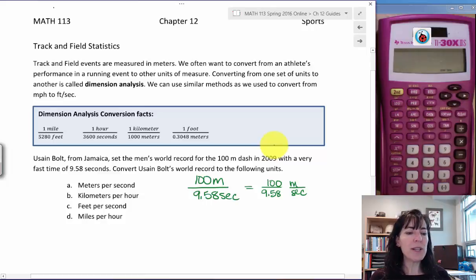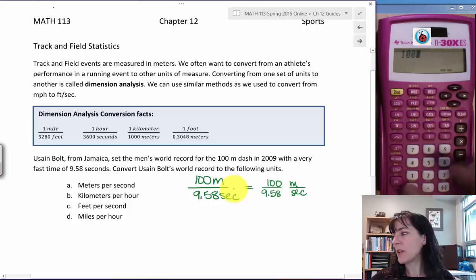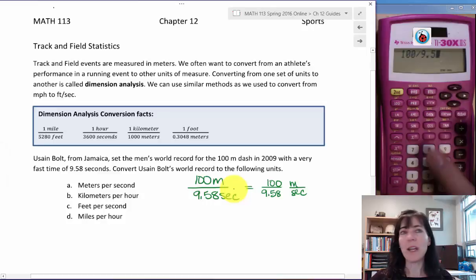So it's really the same thing as separating it out. The 100 over the 9.58 and then meters per second. So 100 divided by 9.58. We're really just finding a unit rate again. 100 divided by 9.58.